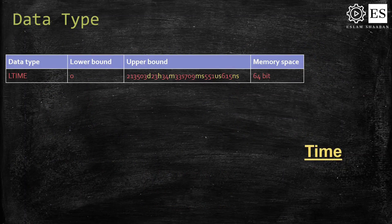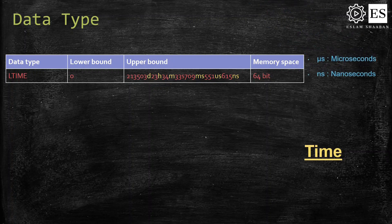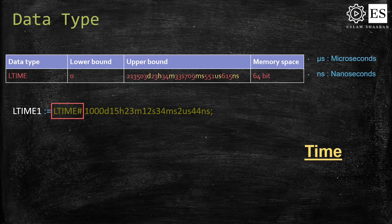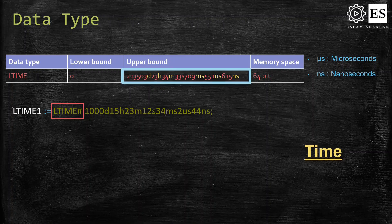The second time data type is LONG TIME — it's the same as the TIME data type but with more resolution, reaching nanoseconds, and of course uses more memory space: 64 bits. The time declaration can contain the same units as TIME, plus microseconds and nanoseconds. When setting a value to a LONG TIME variable, you write LTIME followed by a hashtag and then the value. The upper bound of the LONG TIME data type reaches a tremendous amount — two hundred thousand days!